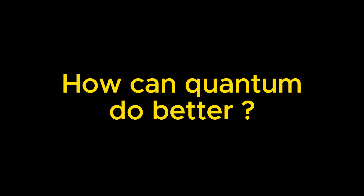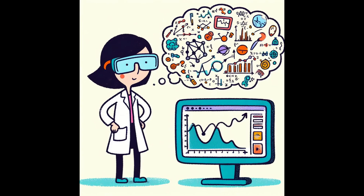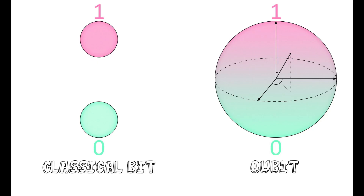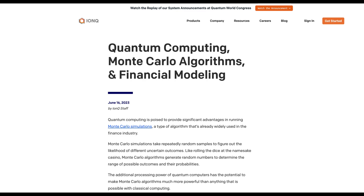How can quantum do better? Running a Monte Carlo simulation on a classical computer can be time-consuming due to the number of runs needed for a confident solution. Quantum computers can achieve a quadratic speed-up over classical simulations. Unlike classical bits, which can only be 1 or 0, quantum bits or qubits can be both simultaneously, using phenomena like superposition. In recent years, quantum tech providers and large financial institutions have collaborated on quantum Monte Carlo projects in finance, making significant progress.